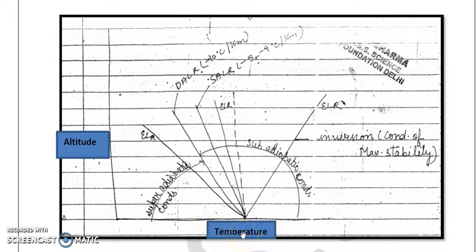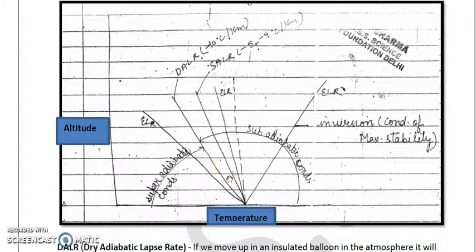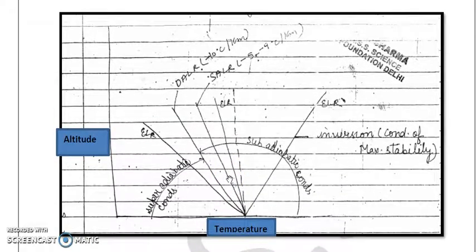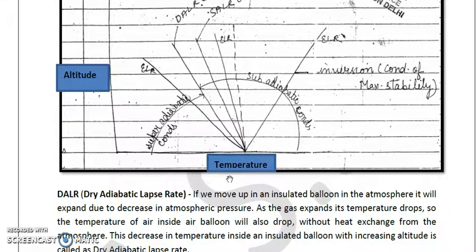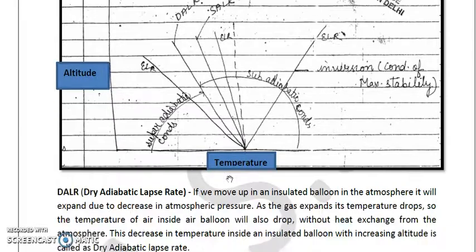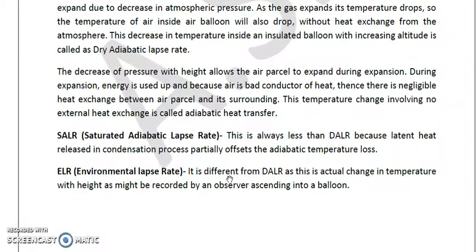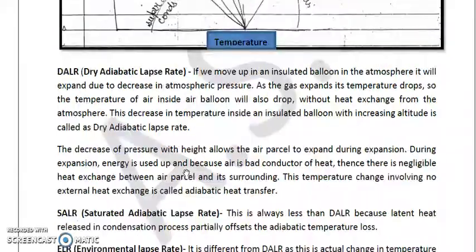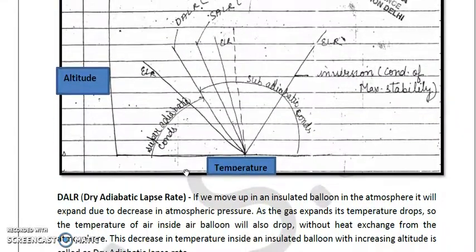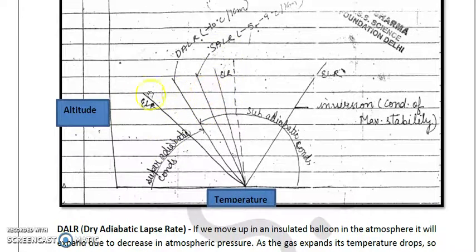Before we start, we will talk about what is meant by atmospheric stability. The first term that comes to mind is lapse rate, or more precisely the environmental lapse rate (ELR). The environmental lapse rate is the rate of change of temperature with increase in altitude or height. As shown in the diagram, ELR generally ranges from 6.5 degrees Celsius per kilometer.